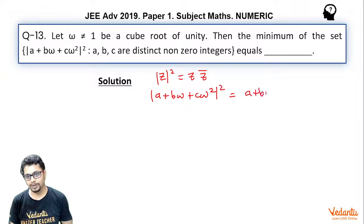So a + bω + cω², and since a, b, c are integers they are definitely real. So when you take conjugate of this whole expression it essentially becomes a + b(conjugate of omega is ω²) and conjugate of omega square is omega.